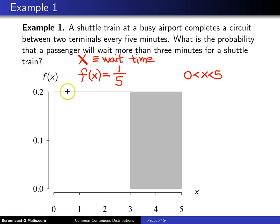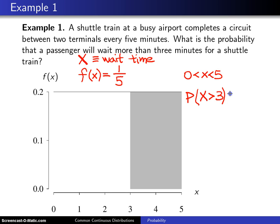And that one-fifth is this height right here, 0.2, on the probability density function. The probability that the random variable X is greater than three — because we're interested in the probability of waiting more than three minutes — will be equal to the integral from three to five of the probability density function one-fifth dx.